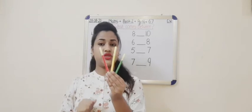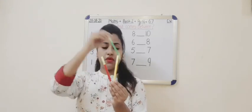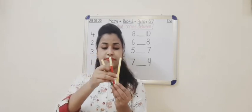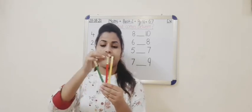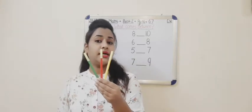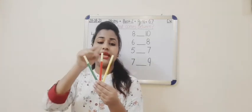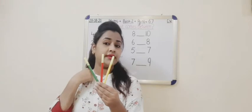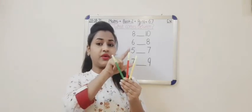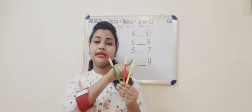Let's change the positions. Now I have changed the position like this. Now tell me which color sketch pen is between the green and yellow one? That is the red one. Red one is between the green and yellow.